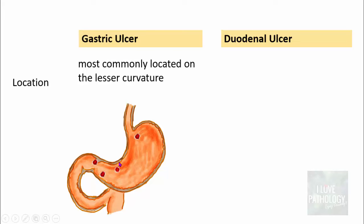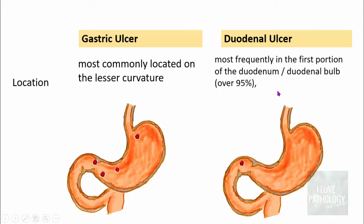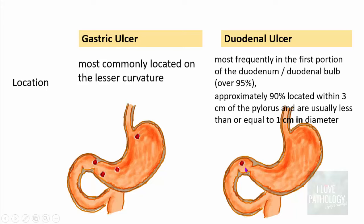Duodenal ulcers are most commonly located in the first portion of the duodenum — the superior part, also referred to as the duodenal bulb. Over 95% of duodenal ulcers are located in the duodenal bulb, and approximately 90% are within 3 centimeters from the pylorus. They are usually less than or equal to 1 centimeter in diameter — basically smaller ulcers.